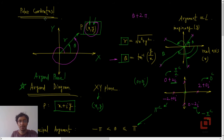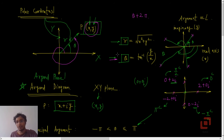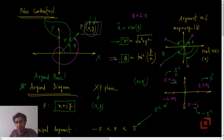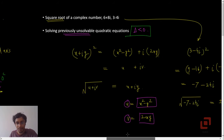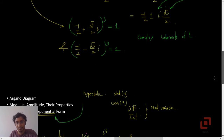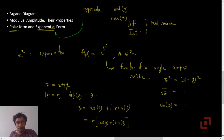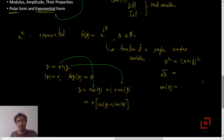The polar coordinates r and theta are nothing but the modulus and the argument of the complex number. We have the transformation equations from Cartesian to polar and polar to Cartesian: x equals r cos theta, and y equals r sin theta. Taking r common gives us cos theta plus i sin theta, and that is the polar form of the complex number.